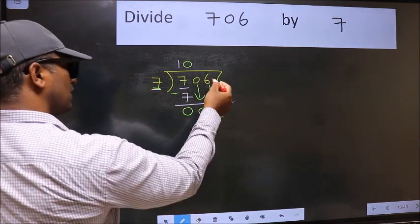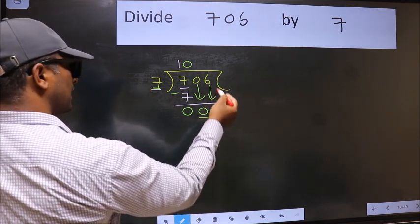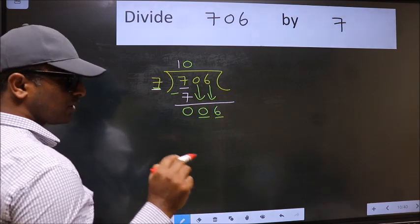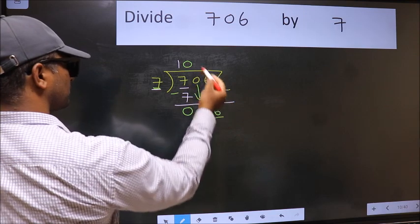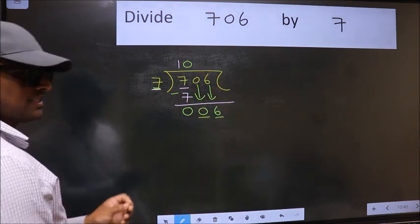And we don't have any more numbers to bring it down. So what many do is they directly put dot, take 0. Which is wrong.